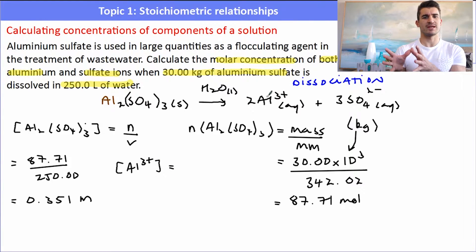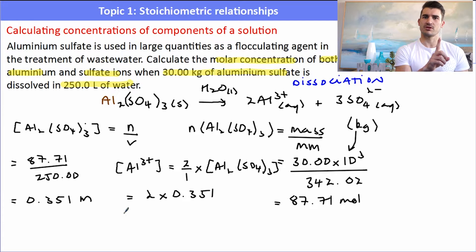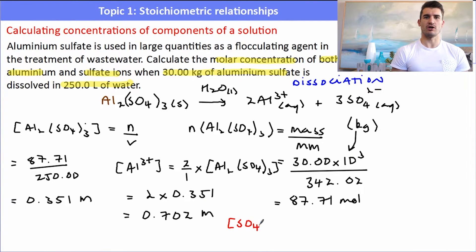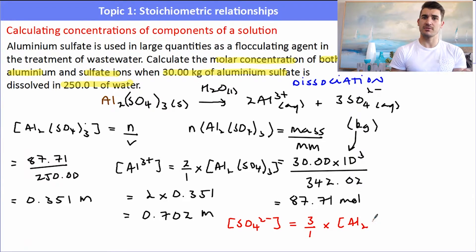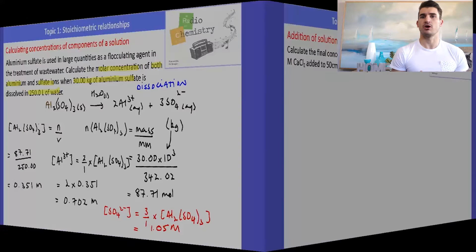To work out the concentration of Aluminium ions, we use the ratio between Aluminium and Aluminium Sulfate. When it dissolved, it released two Aluminium ions, so the concentration of Al³⁺ is two times the concentration of Aluminium Sulfate: 2 × 0.351 = 0.702 mol dm⁻³. For Sulfate ions, the ratio is three to one — for every Aluminium Sulfate there were three Sulfate ions — so we multiply 0.351 by three to get a Sulfate concentration of 1.05 mol dm⁻³.